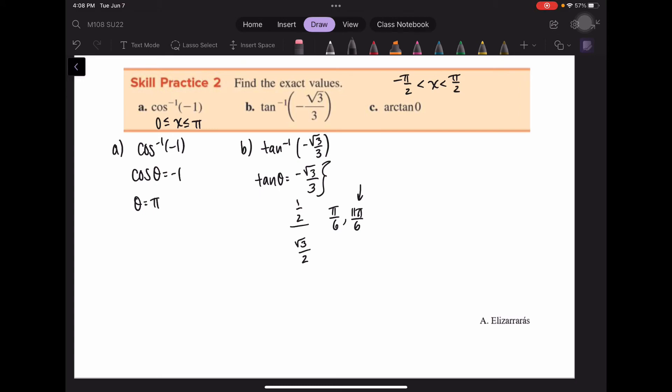At pi over 6, the x is also positive, so that's not going to work to give me a negative. So only the 11 pi over 6 would work, which if I took away 12 pi over 6, I would find that negative pi over 6 is the angle that we would use to find the exact value.